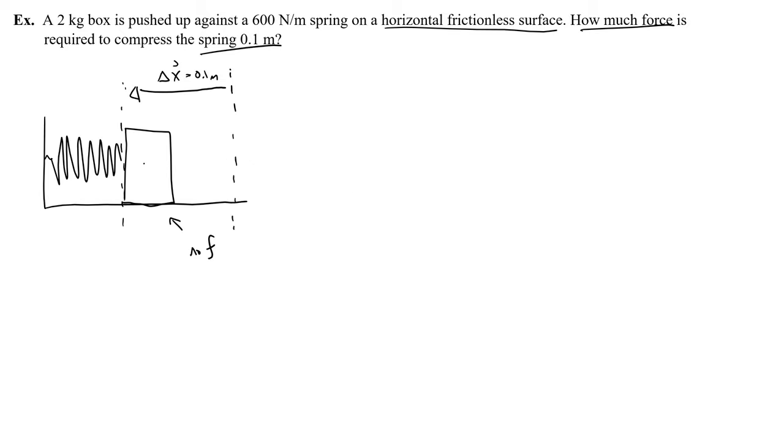The idea here is that the force that you push with is going to be equal to the force of the spring at this distance. So really the problem is asking you to figure out what will the force of the spring be at 0.1 meters, and then that's how much you have to push against it in order to balance it or to act against it. So let's just think about the force of the spring. We know that the spring constant k is 600 newtons per meter. Now we have enough information to solve the problem.